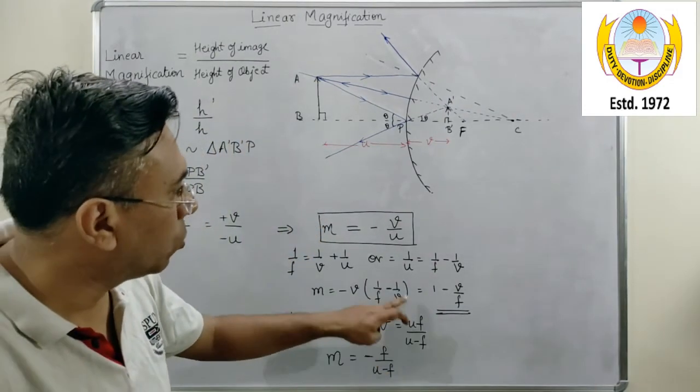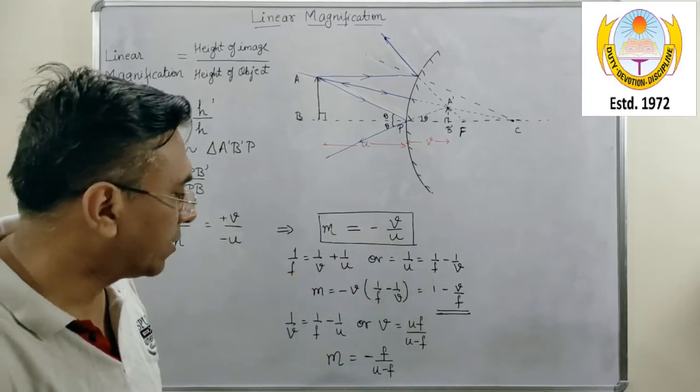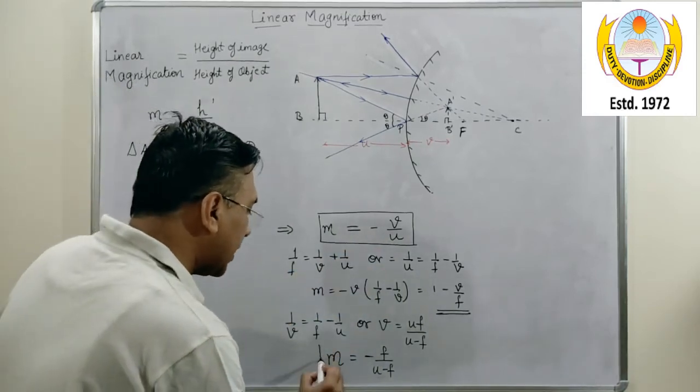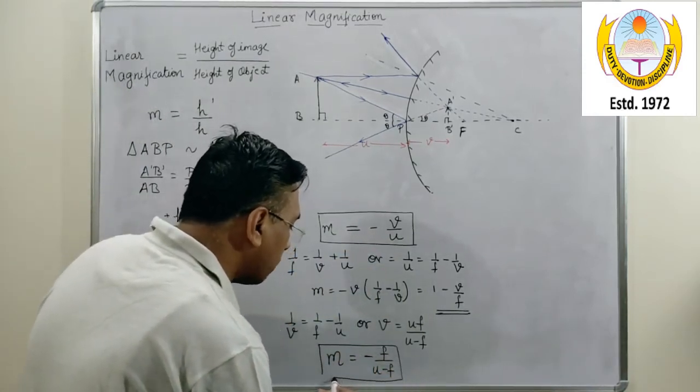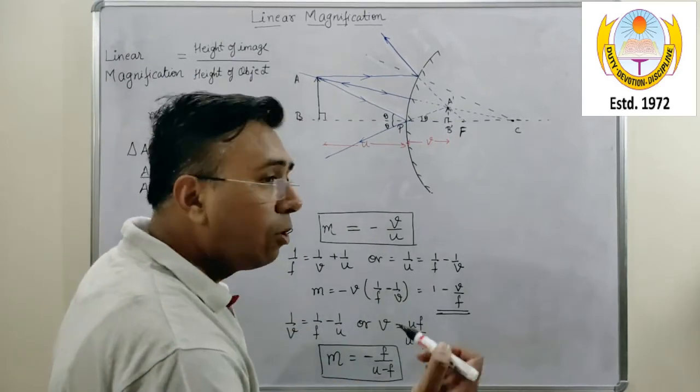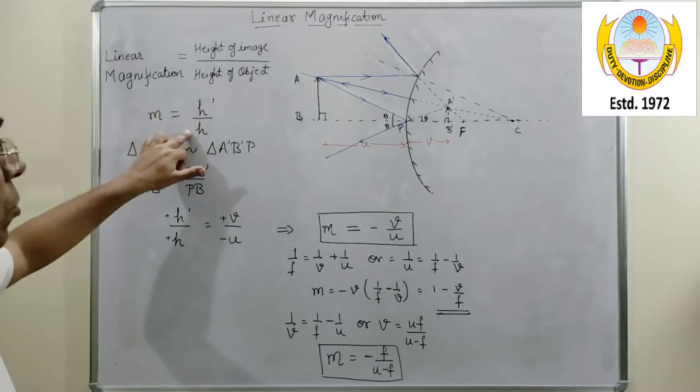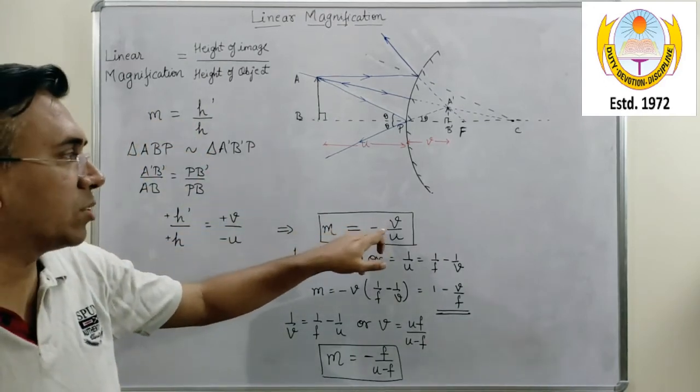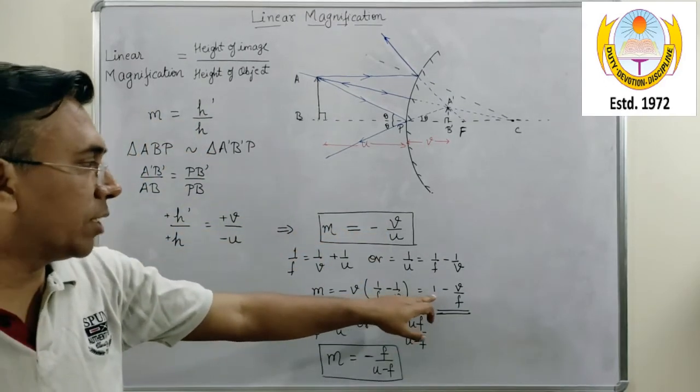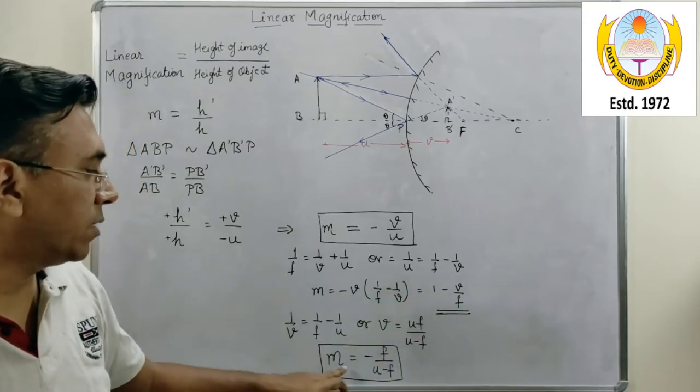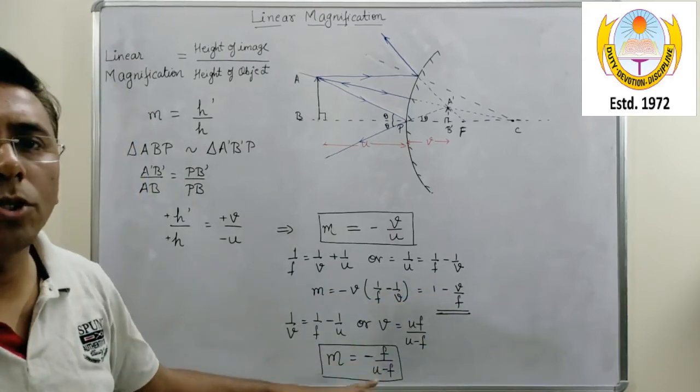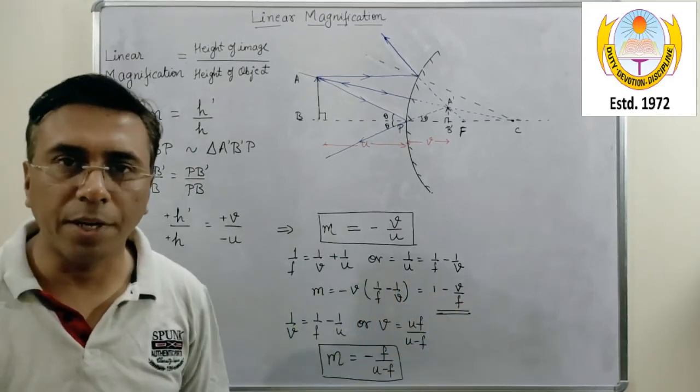Because what will happen? This U and this U will cancel and finally I get this formula for the magnification. So for the magnification I get four formulas, four different formulas. The first basic formula is h' upon h. Another one is minus V upon U. Another one is 1 minus V upon F. And the fourth one is minus F upon U minus F, or F upon F minus U.